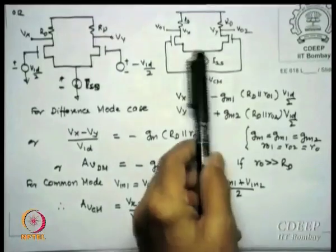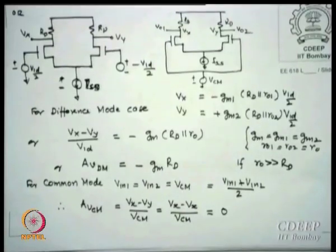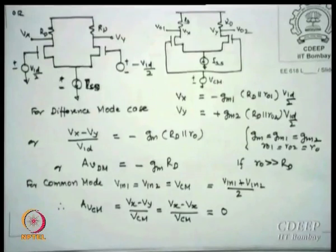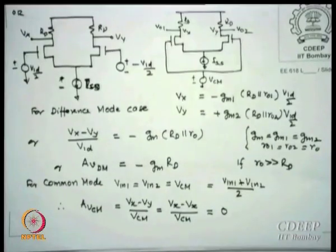For the common mode circuit, since Vx equals Vy (both inputs give the same output), the difference Vx minus Vy is zero, so the common mode to differential gain is zero. The ratio of AV_DM to AV_CM is therefore infinite — meaning common mode signals will never get amplified. This is the main feature of a differential amplifier.